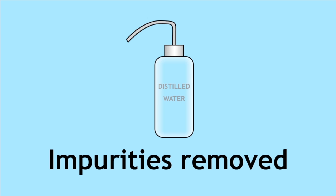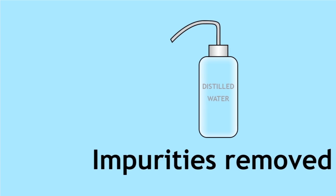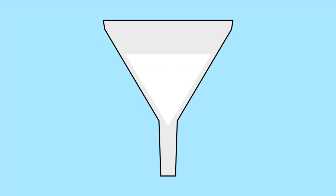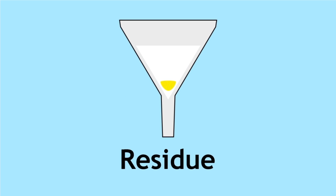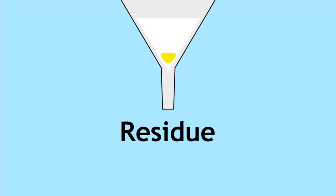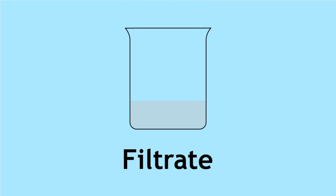This filtration process separates a solid from a liquid. The solid collected is known as the residue, and the liquid that the solid is separated from is known as the filtrate.